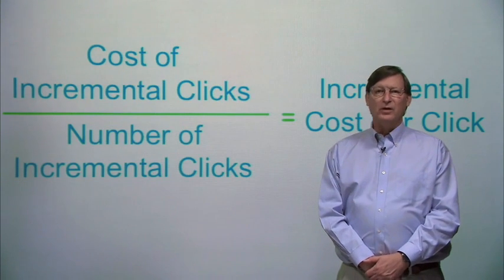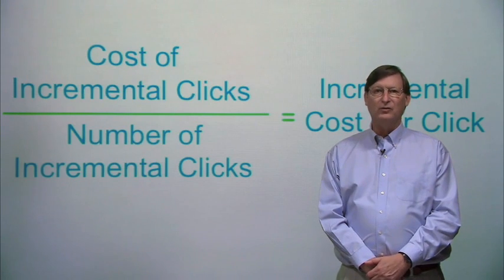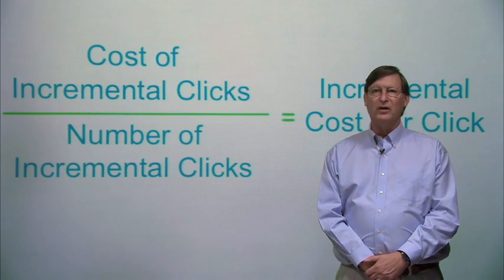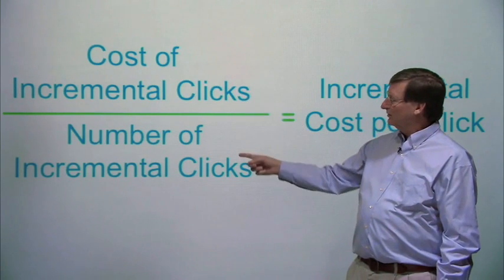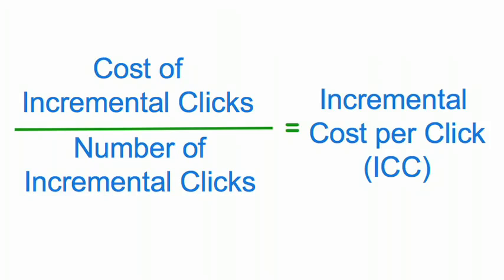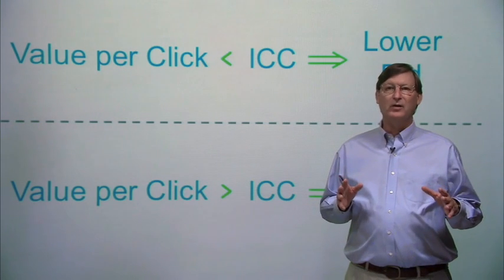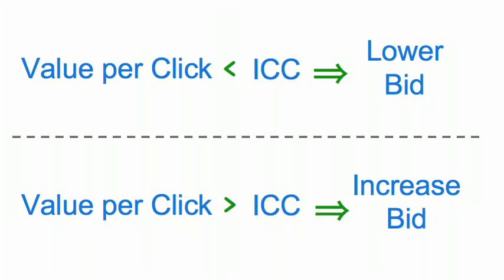The reason that a max bid of $4 generated more profit than our initial $5 bid was because the incremental cost of the clicks we got at the higher bid exceeded the incremental value of those clicks — the additional cost of gaining the clicks was more than the revenue we generated from them. That ratio, the cost of incremental clicks divided by the number of incremental clicks, is called the incremental cost per click, or ICC. Whenever your value per click is less than the incremental cost per click, it will pay you to lower your bid. Conversely, if your value per click is higher than your incremental cost per click, you should increase your bid.